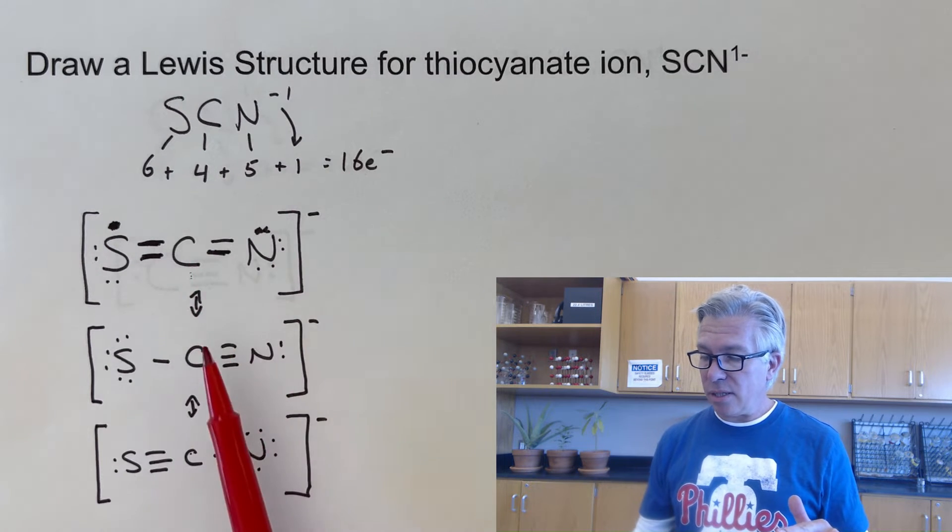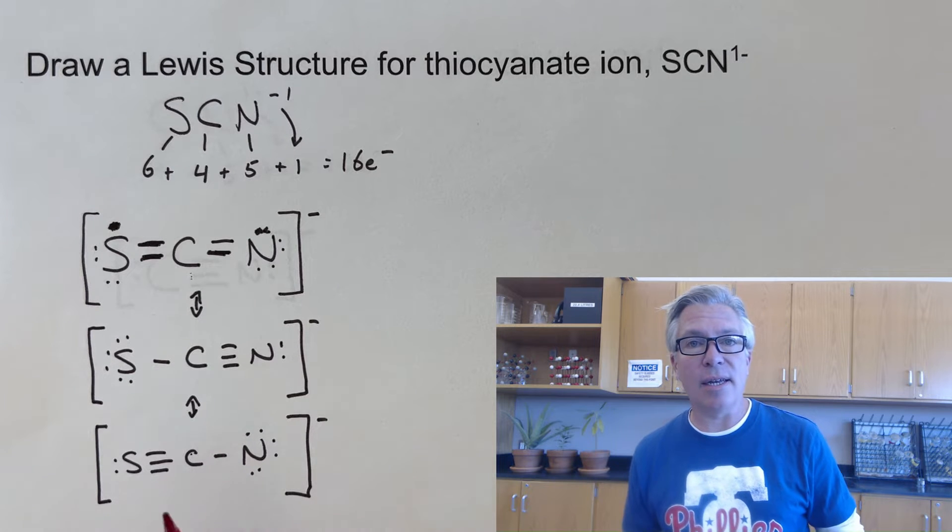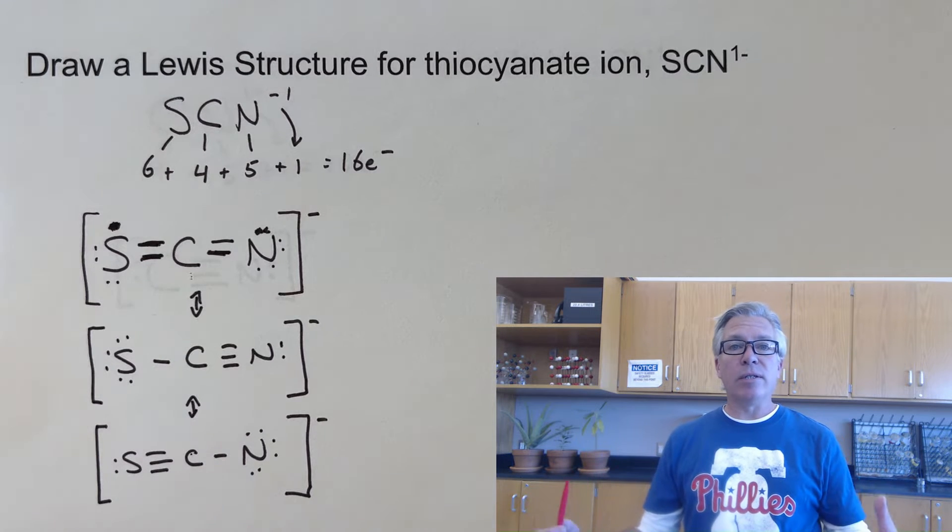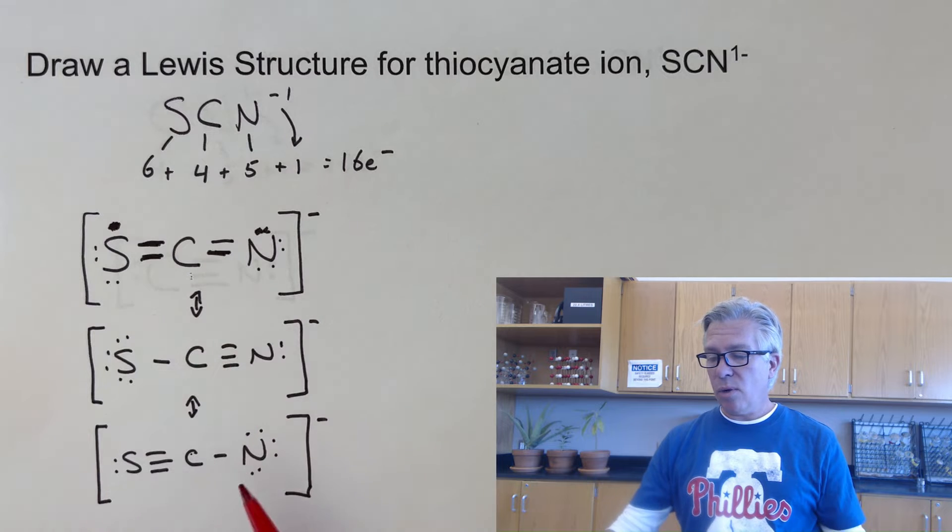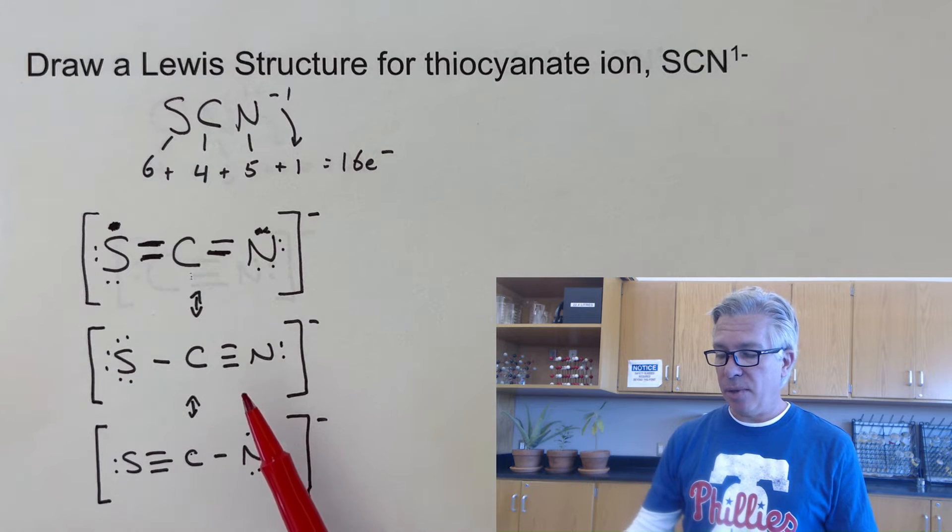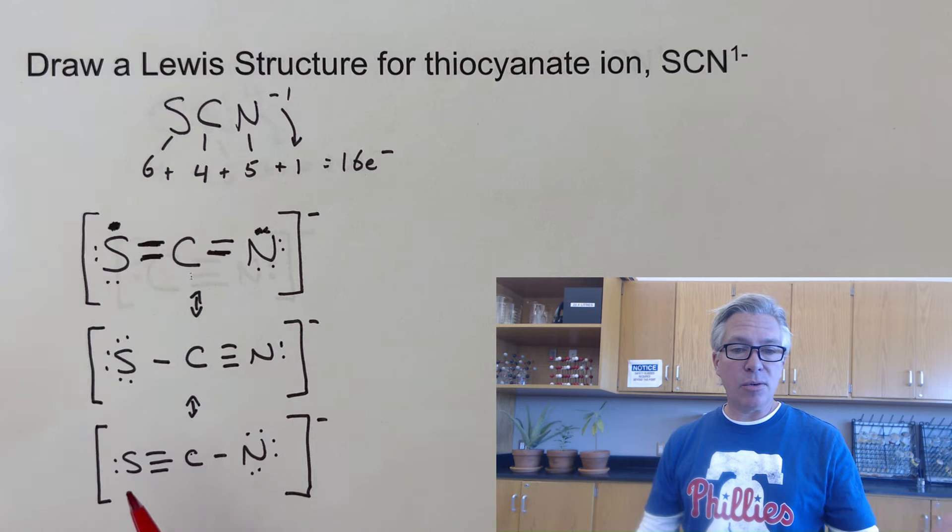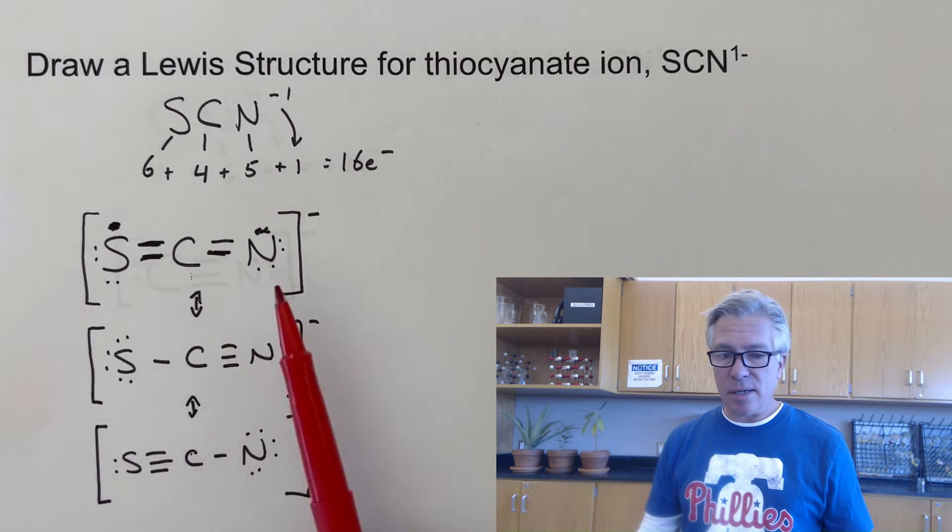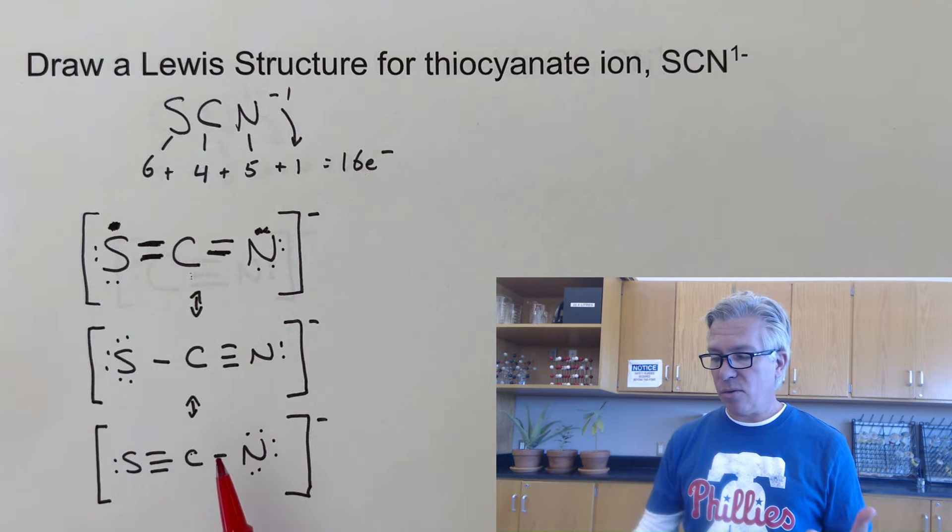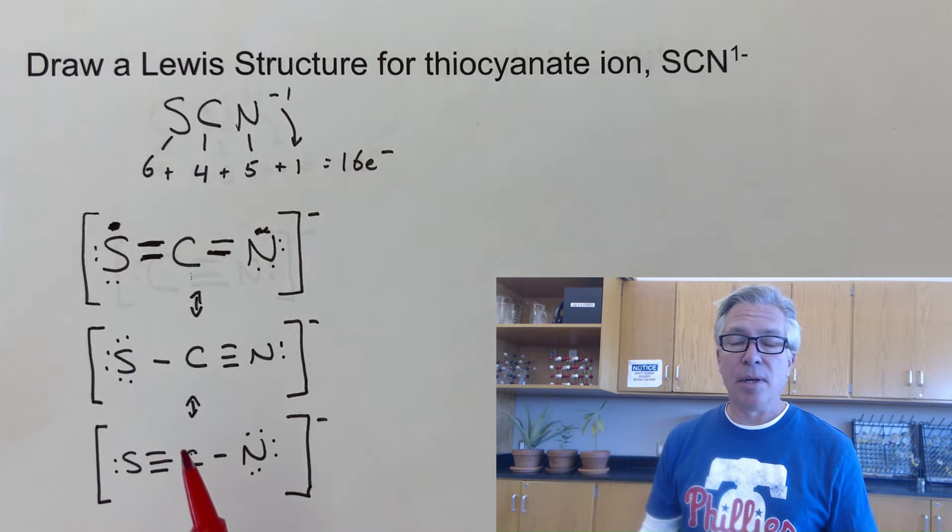But this is the three resonant structures for thiocyanate ion. And in the previous video, we talked about what would be the most likely scenario here. Do all of these exist equally as the bonds and the electrons resonate around the molecule, or is one more likely to occur, one more stable?